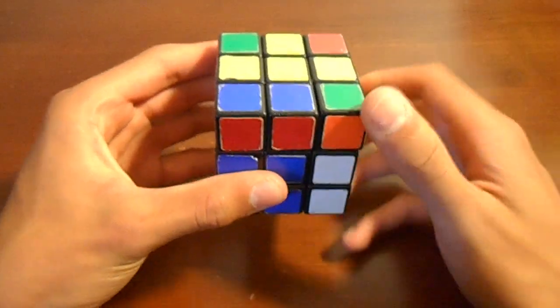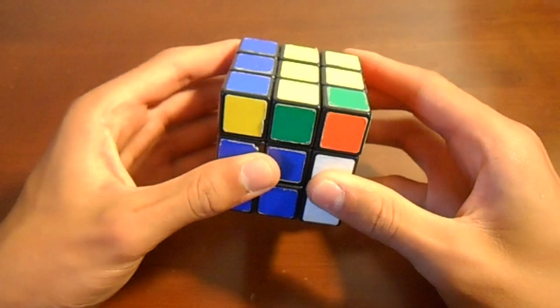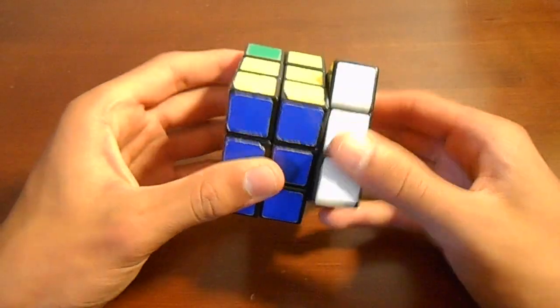And now here comes the last algorithm for the yellow cross. And that is in cube notation: r, u, r prime, u, r, u2, r prime.